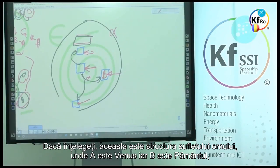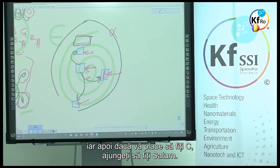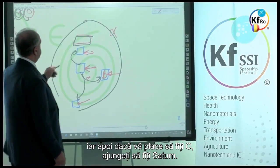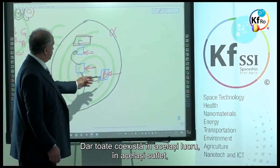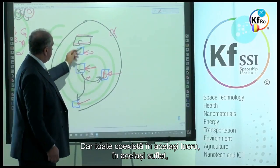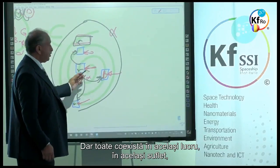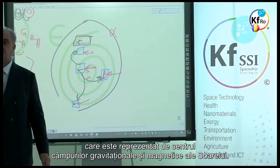If you understand this is the structure of the soul of the man, A is Venus, where B is Earth, and then if you like to be C, you end up to be Saturn. But they all coexist and the same thing from the same soul which is the center of the sun's gravitational magnetic.